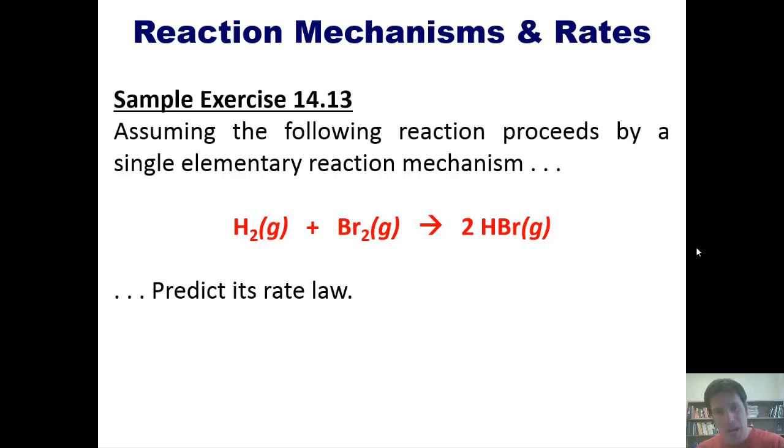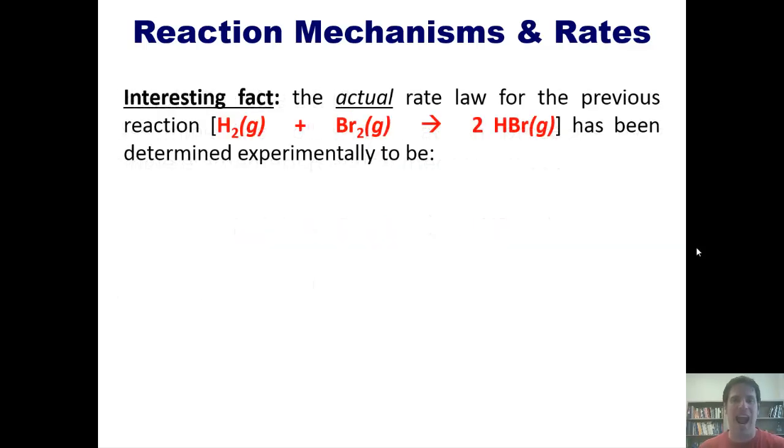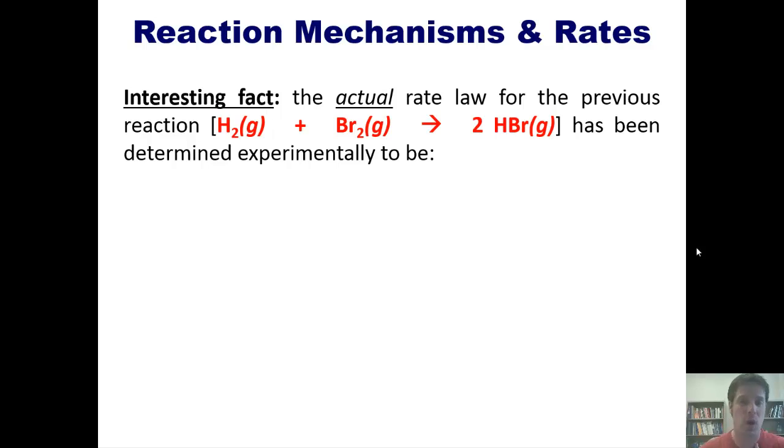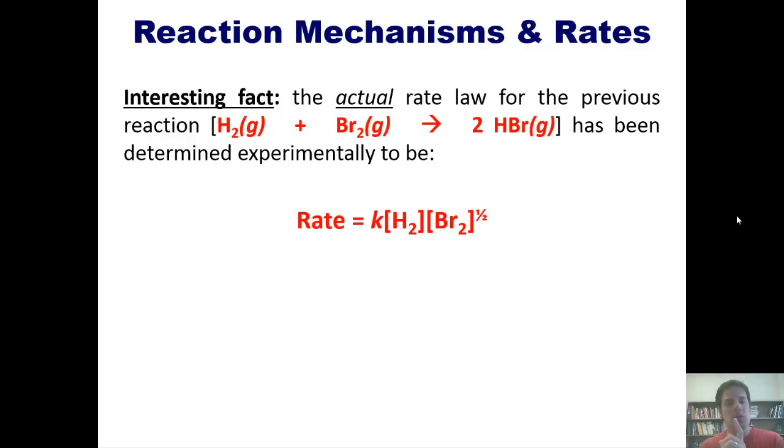Now, interestingly enough, this reaction in real life actually has a different rate law, and it's been determined experimentally to be this. Wow, you can have a rate law that's one-half order with respect to one of the reactants? Yeah, you can. But what does this mean? Well, this means that the actual reaction mechanism for this does not occur by a single elementary step, as the question we just did presupposed. It must therefore involve two or more elementary steps.